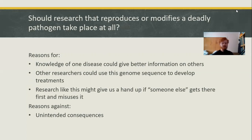We can say with a lot of certainty that the researcher who published the genome did not want people to pick it up and make bioweapons with it — he probably had more altruistic ideas in mind. But as we have seen, there are unintended consequences. Sometimes the wrong people get hold of something, or sometimes there's an outbreak in a lab. But we do have reasons for the research as well.